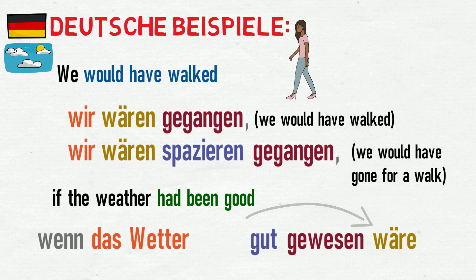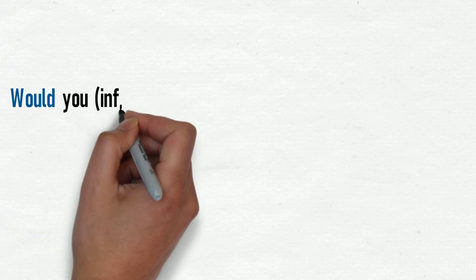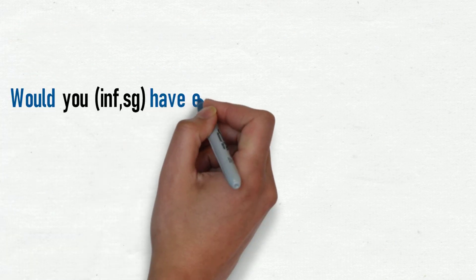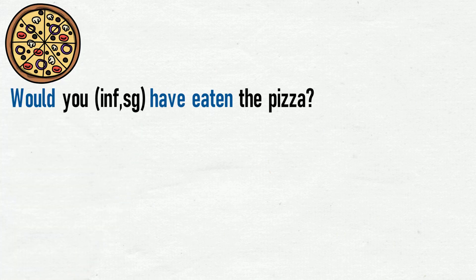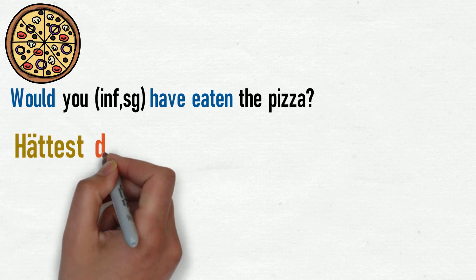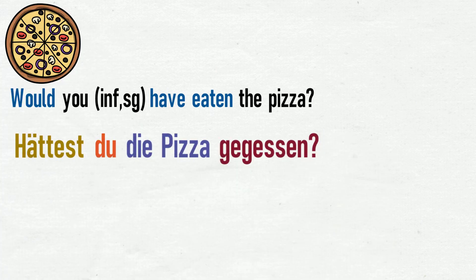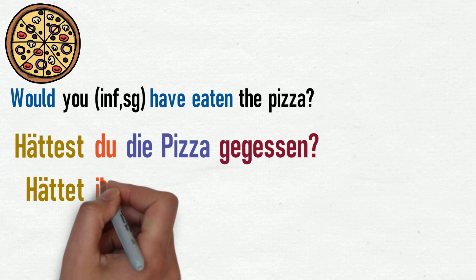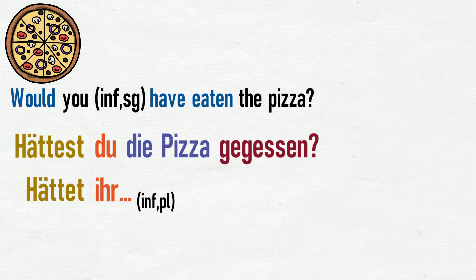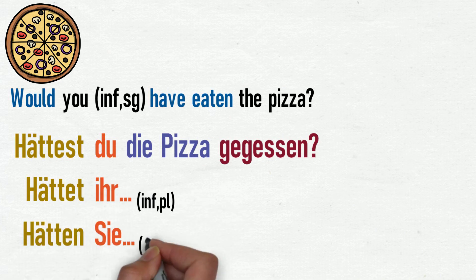And the final example: 'Would you — in formal singular — have eaten the pizza?' Hättest du die Pizza gegessen? To make this formal or informal plural, we just change the verb and the pronoun. For example: Hättet ihr, or Hätten Sie.